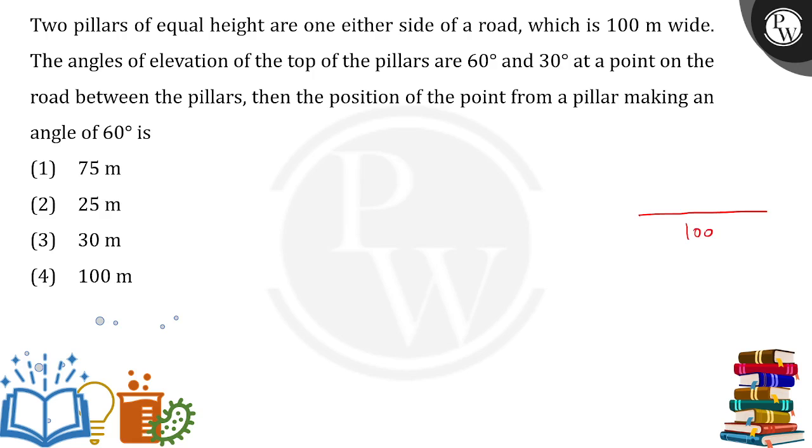On this 100 meter road, the angle of elevation for the top of the pillars are 60 degrees and 30 degrees. So somewhere we are standing and for this one we are having an angle of 60 degrees. This is 60 degrees, and for the other building we are having an elevation of 30 degrees. So this has 60 degrees and this one has 30 degrees. We have drawn the figure.